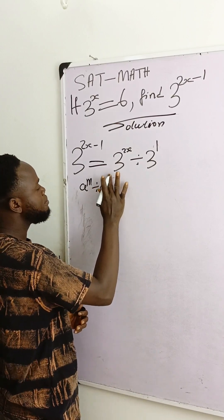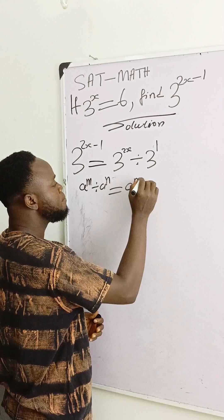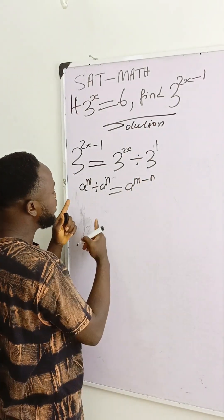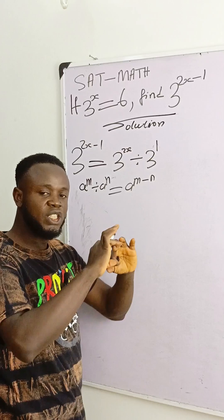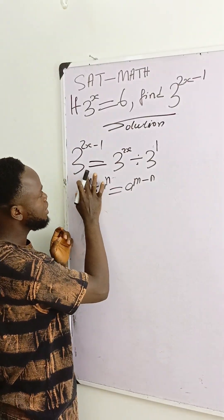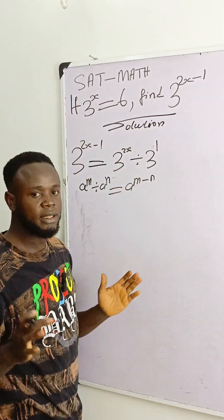a raised to power m divided by a raised to power n equals a to the power m minus n. With this law of division, pick one of the bases and subtract the exponents. This is equal to this, exactly the same thing.